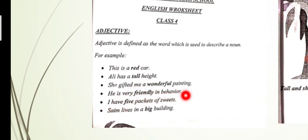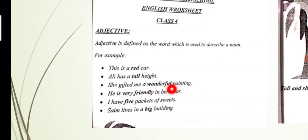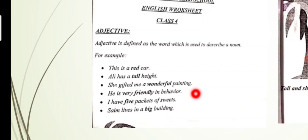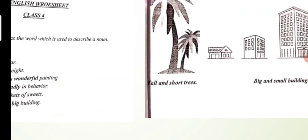'I have five packets of sweet.' What is the noun? Packets. And 'five' tells how many packets there are, so five is the adjective. Then: 'Saim lives in a big building.' Saim lives in a big building — so 'big' is the adjective here, describing the building which is the noun.